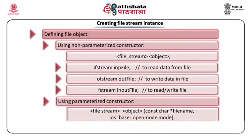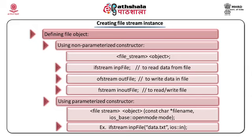To define a file stream object, we can use two constructors — either parameterized or non-parameterized. Using the non-parameterized constructor requires only the file stream class name and the object name. For example, ifstream inpfile — inpfile is the object of class ifstream; ofstream outfile — outfile is the object of class ofstream. When we create an instance of ifstream, by default it is used only for reading, just like cin. When we create an object of ofstream, it is used for writing, similar to cout. And when we create an object of fstream, it can be used for both reading and writing.